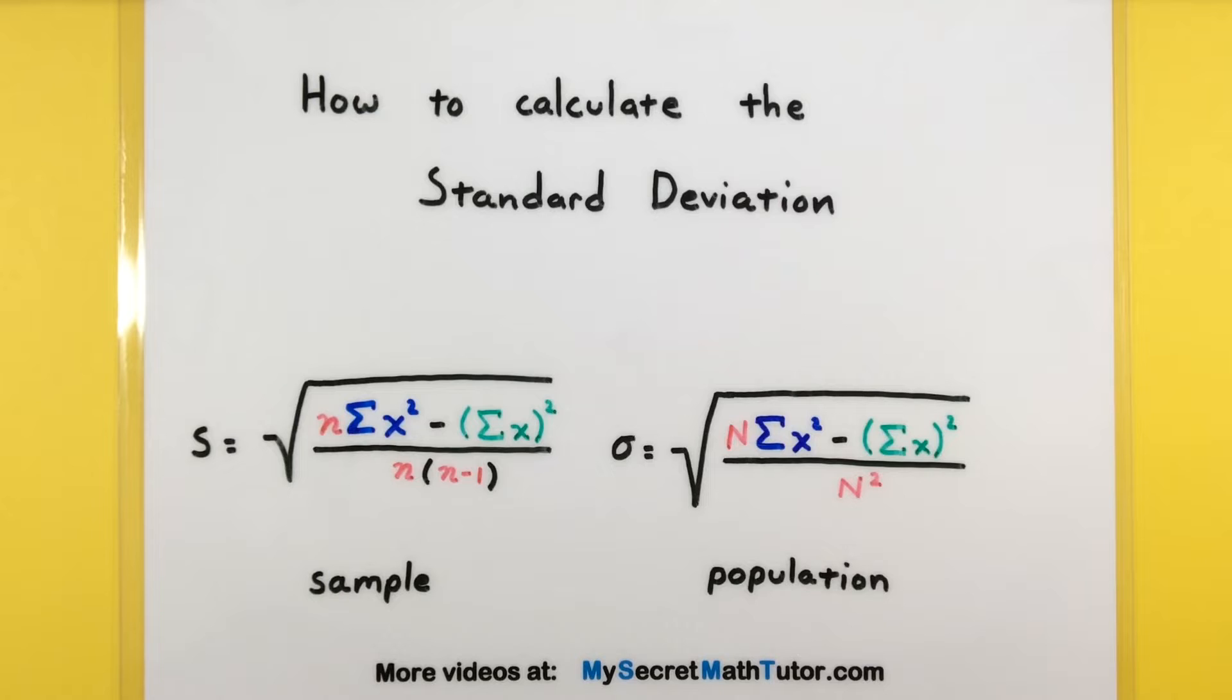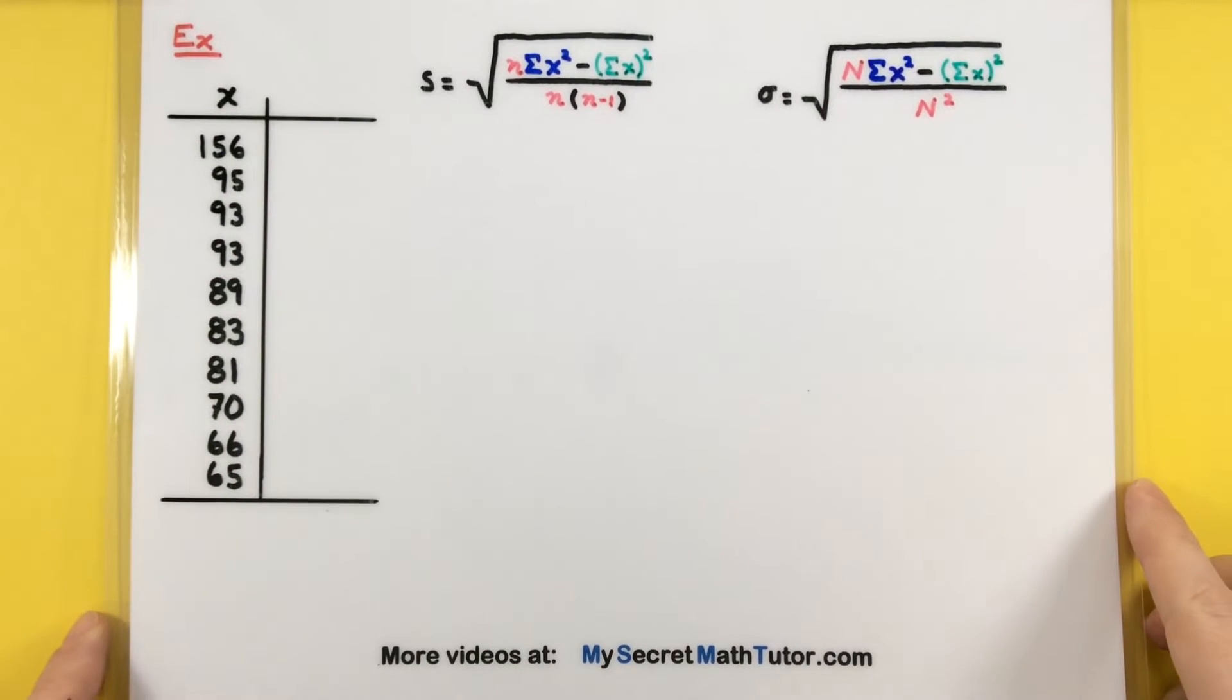depending on whether your data comes from a sample or a population, there are actually two different formulas that you have to keep track of. And they're almost identical, except for you'll notice in the bottom here, in the sample, it has an n-1, whereas when you're dealing with a population, you really just have a couple of n's, or an n squared. So, you do have to know exactly what your data is coming from, but other than that, it's a fairly straightforward and simple calculation. So, let's go ahead and move on to an example and see exactly how this would work.